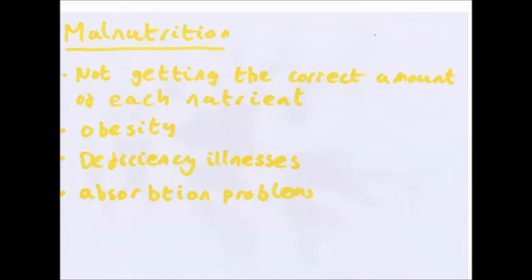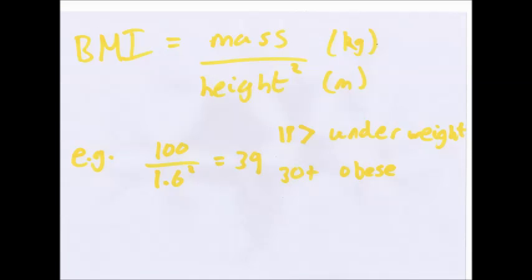Absorption problems can also cause deficiency illnesses — the body can have trouble absorbing minerals — and that's another form of malnutrition. We measure malnutrition using BMI, the Body Mass Index. This is just mass in kilograms divided by height in metres squared. For example, if someone had a weight of 100 kg and a height of 1.6 m, they would have a BMI of 39.